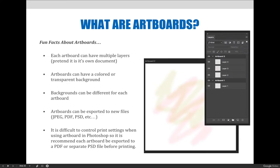Art boards can be exported to new files. In web design, art boards are used to create different layouts for different platforms — for example, if you're designing for a phone, you might have an art board for each type of phone and its aspect ratio. Once you have those art boards, you can export any one of them to its own individual document as a JPEG, PDF, PSD file, and more. It's also difficult to control print settings when using art boards in Photoshop, so it's recommended to export each art board to its own file before printing — a PDF, Photoshop file, or TIFF are appropriate print formats.